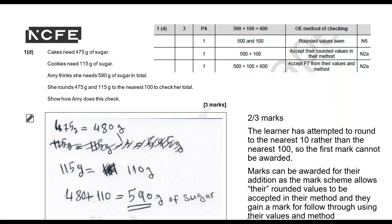However, the learner can get the next two marks, which assess subject content statement N2 relating to addition. Marks can be awarded for their addition as the mark scheme allows their rounded values in their method. They've written 480 plus 110 instead of 500 plus 100, and that's acceptable. They've also correctly added their values together to give 590 grams of sugar. So 2 out of 3 marks.